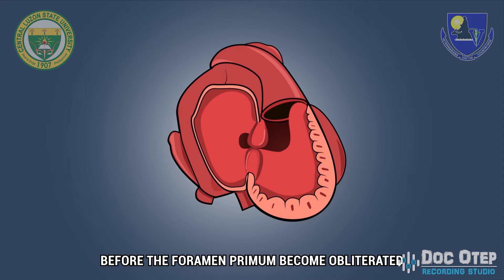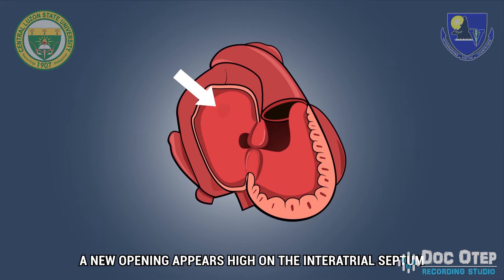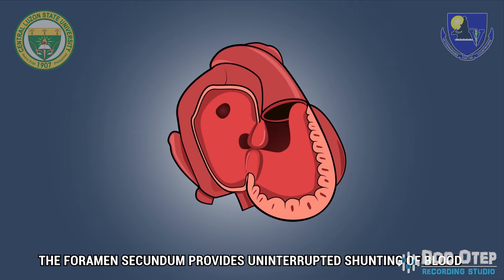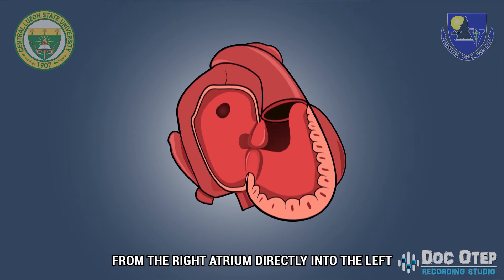Before the foramen primum becomes obliterated, a new opening appears high on the interatrial septum. By the time it develops this orifice, the foramen secundum provides an uninterrupted shunting of blood from the right atrium directly into the left.